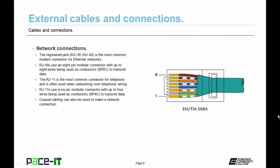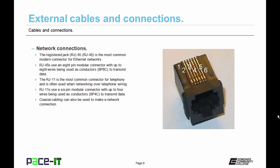Now the RJ11 is the most common connector for telephoning. And it's often used when networking over telephone wiring or for when you're making telephone calls. The RJ11 uses a six pin modular connector with up to four wires being used as conductors. Technically that's a 6P4C modular connector.